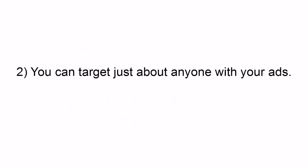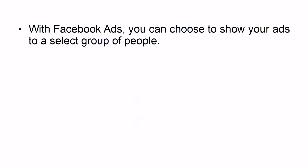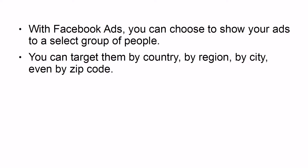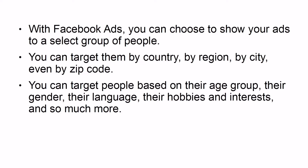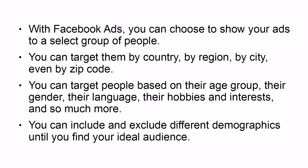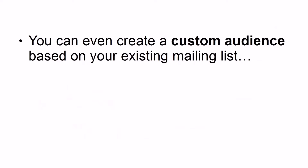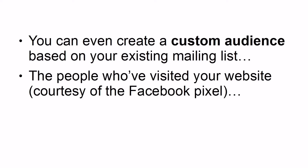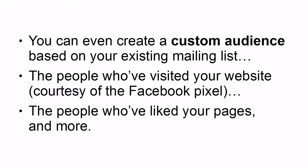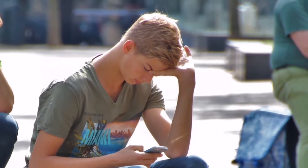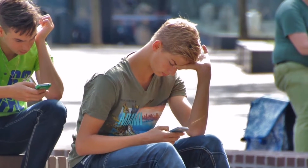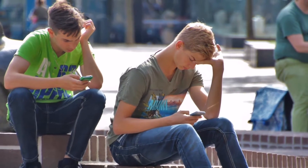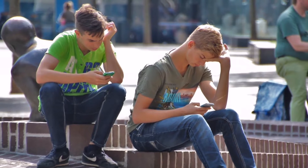Reason 2: You can target just about anyone with your ads. You can target people based on their age group, their gender, their language, their hobbies and interests, and so much more. You can include and exclude different demographics until you find your ideal audience. You can even create a custom audience based on your existing mailing list, the people who visited your website via the Facebook Pixel, or the people who've liked your pages. If you want to target people with similar characteristics to your custom audience, you can create a lookalike audience — marketers love this feature, especially once they've found an audience that converts well.